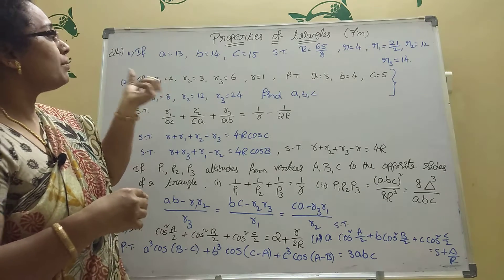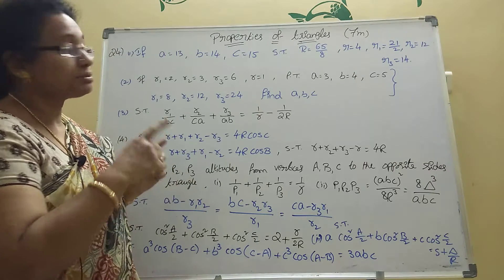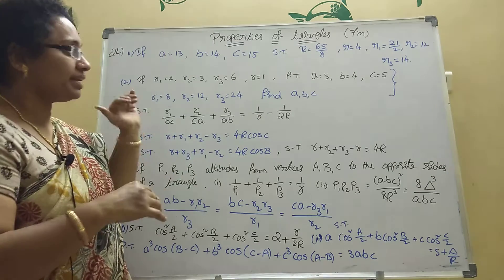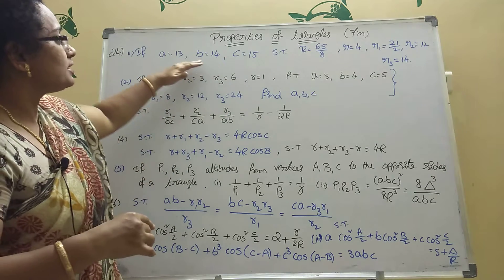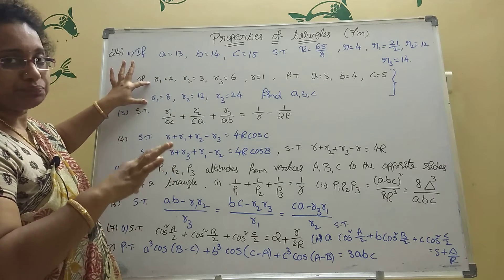Then here one model is there. ABC is given, then you should find first S. What is the formula? 2S equal to A plus B plus C. Use that formula, you will get easily. Here this one model. This is a reverse model. These two sums I wrote up here, models.